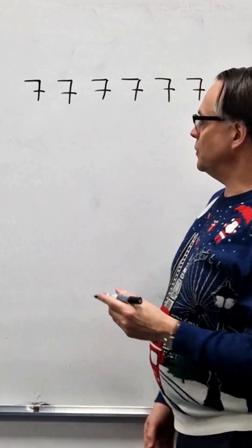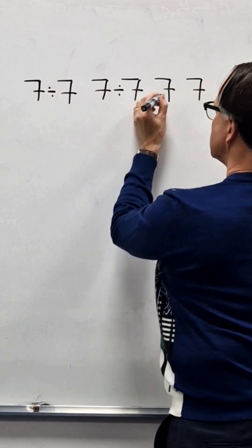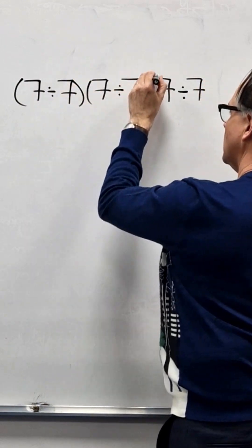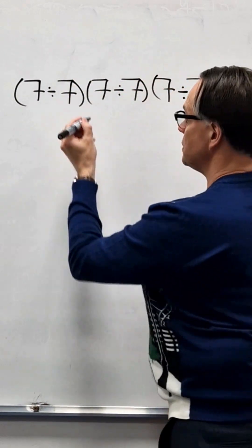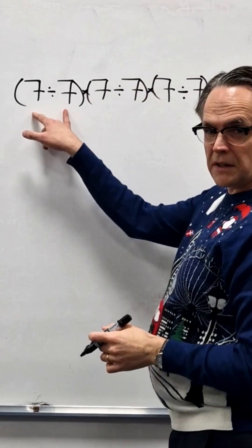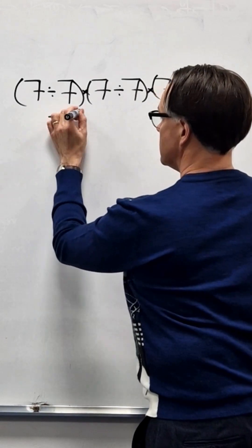So for example, if I put divide signs here and times in between them, then 7 divided by 7 is 1, 1 times 1 times 1 is 1.